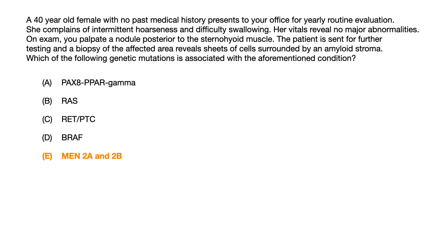Let's go back to the clinical vignette and highlight the important information you should have been paying attention to. The first thing to notice in any question is the sex and age of the patient — we have a 40-year-old female. Symptoms include hoarseness and difficulty swallowing, or dysphagia. There's a nodule posterior to the sternohyoid muscle. The thing that absolutely seals this diagnosis is sheets of cells surrounded by an amyloid stroma — when given a histological description like that, the test writer is essentially giving you the answer.